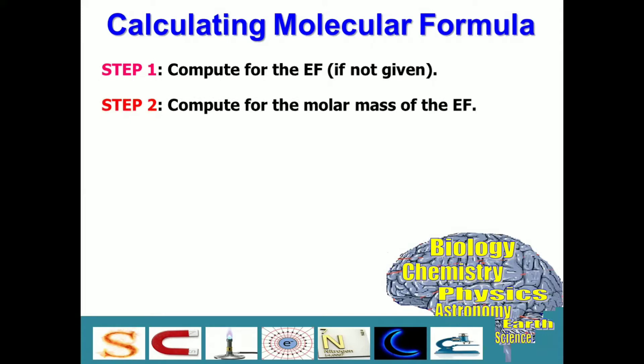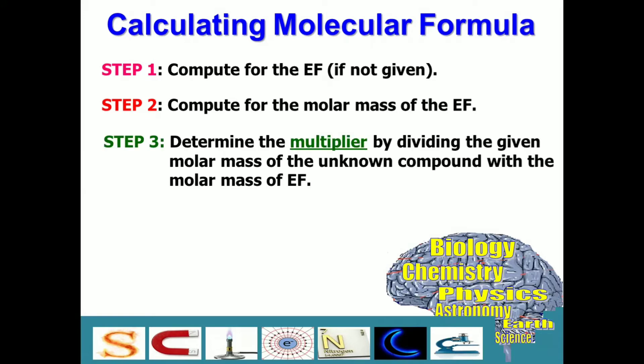Step number two, after finding out the empirical formula of that unknown compound, you have to compute for its molar mass. Then, step number three, determine the multiplier by dividing the given molar mass of the unknown compound with the molar mass of EF.